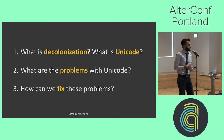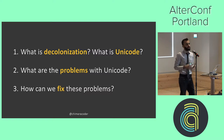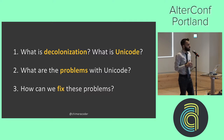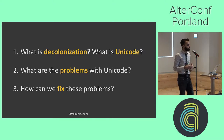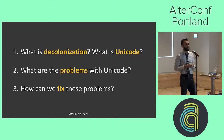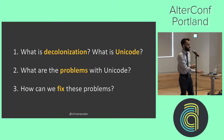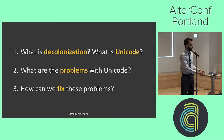There are three parts to this talk. First, we need to understand what we mean when we're talking about decolonization and Unicode. Then we'll be looking at what some of the problems in Unicode are — both specific decisions that are problematic as well as structural problems with Unicode as a project. And finally, we'll be looking at how we can fix some of these problems.